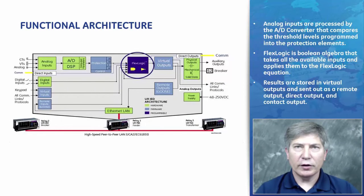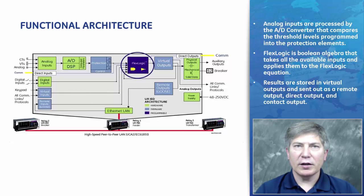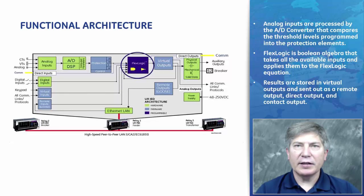The functional architecture of the UR relay has all inputs on the left and all outputs on the right. Inputs from CTs, VTs, and analog inputs are put through an A-to-D converter to compare against thresholds programmed into the protection elements. The results from protection elements, along with digital inputs, virtual inputs, and remote inputs, are used in the flex logic block. Flex logic is the Boolean algebra that takes all available inputs and applies them to flex logic equations. The results are stored into the virtual output, which can then operate a contact output to open a breaker, send a GOOSE message via remote output, or send a direct output to another UR.